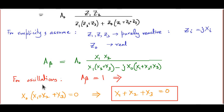Since the Barkhausen criterion demands A·beta = 1, the right-hand side must be purely real, meaning the imaginary term in the denominator must vanish. So Z0·(X1+X2+X3) = 0. Since the output impedance, no matter how small, is not exactly zero, we end up with the demand that X1+X2+X3 = 0.